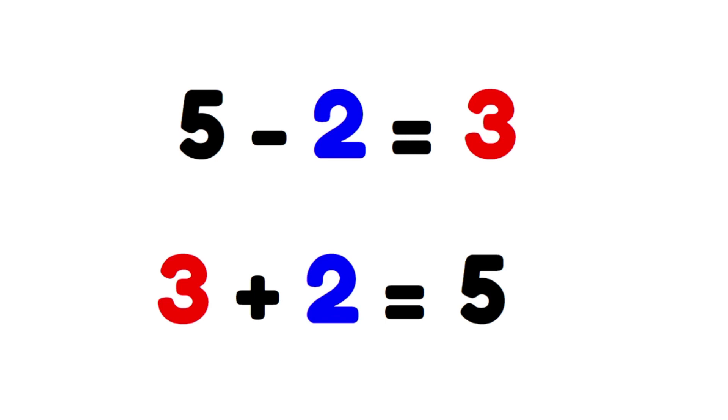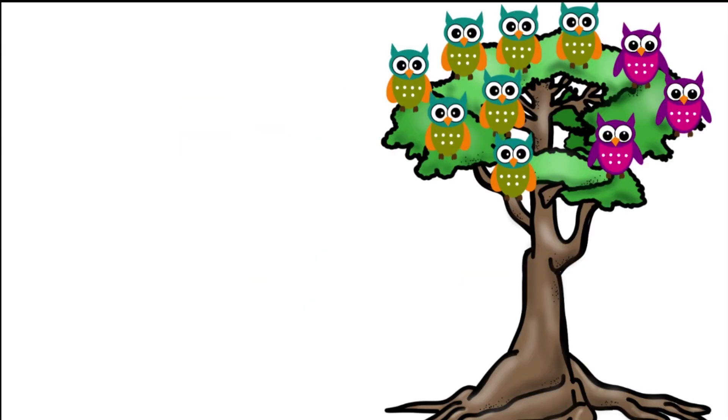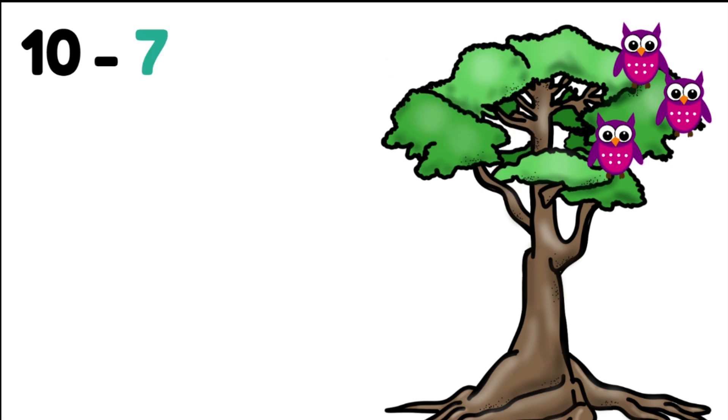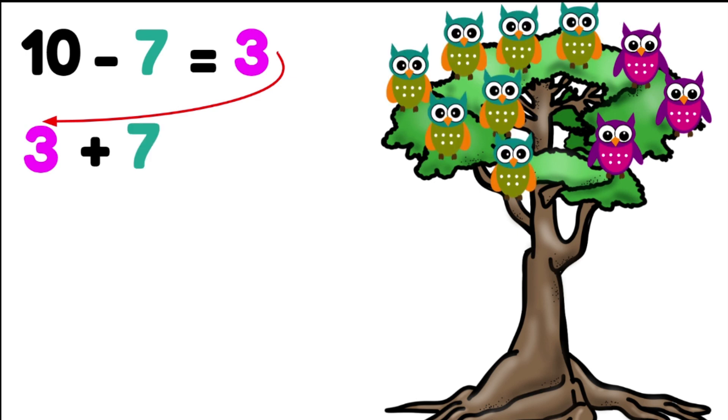If there are ten birds in a tree altogether and seven of them fly away, then I'm left with only three birds. Let's do the reverse of that. There are now three birds and seven birds come back. I now have ten birds altogether. The addition is the opposite of the subtraction.